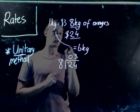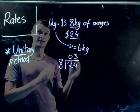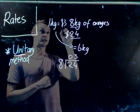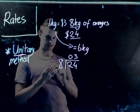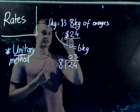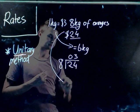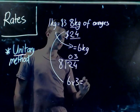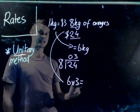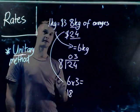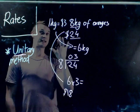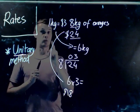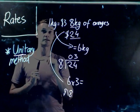Now we can work out what six kilos would equal. All we need to do is multiply by six — so six times three equals eighteen dollars. By breaking our rates down and understanding what one unit is, we can then expand from there and work out any other quantity.